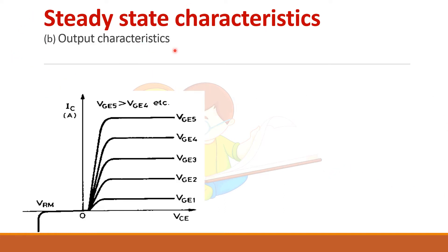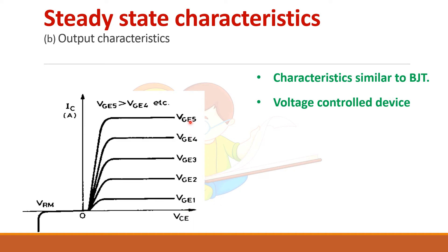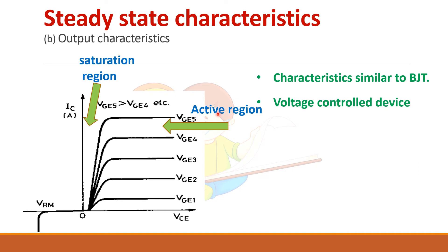The output characteristics are similar to that of a BJT. The controlling parameter is voltage, so it is a voltage-controlled device. There are three regions: active region, saturation, and cutoff region. To act as a switch, the IGBT is operated either in the saturation region or the cutoff region. In the active region, power dissipation is high, so it is not preferred in power electronics applications.